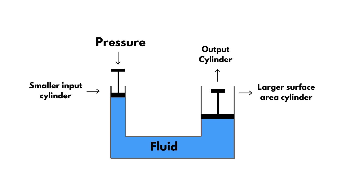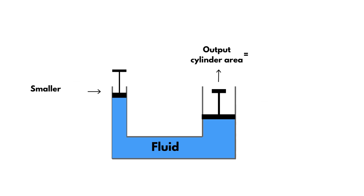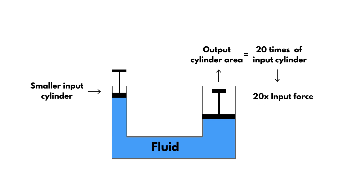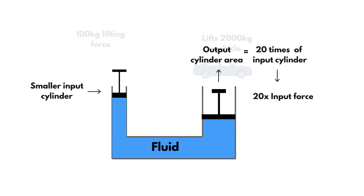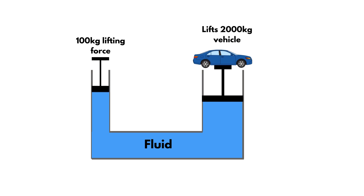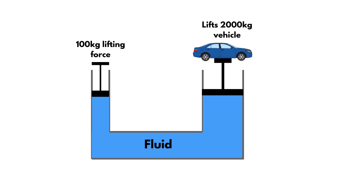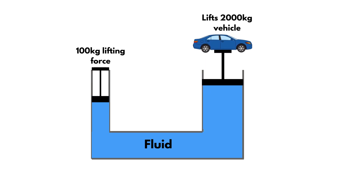For example, when the area of the output cylinder is 20 times larger than that of the input cylinder, the output force is enhanced by a factor of 20. Therefore, a lifting force of 100 kilograms can successfully lift a vehicle weighing 2000 kilograms, illustrating how a small amount of effort can produce substantial work.